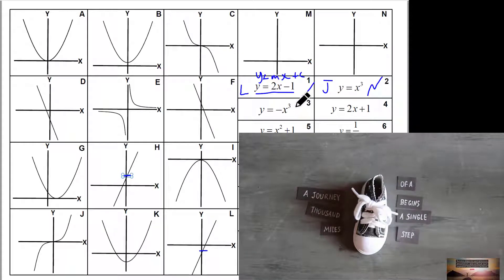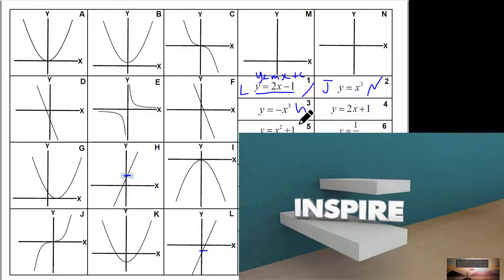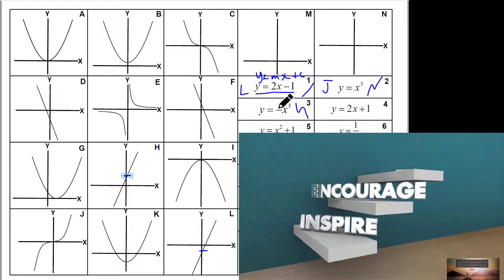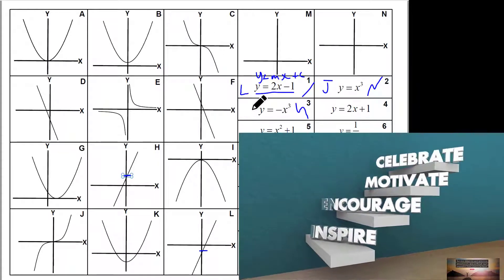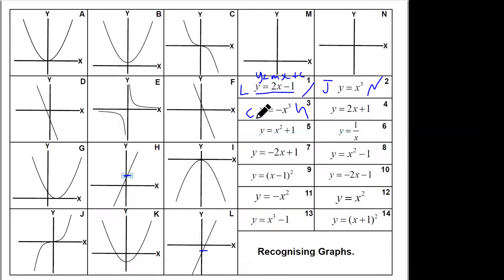That's a negative x-cubed, so it's going to be this shape. It goes through zero zero because when x equals zero, y equals zero. So that's got to be C. Pause this video at any point and see which ones you can do. Now can you see this is 2x plus 1, with a positive gradient and y-intercept one. And that is H.